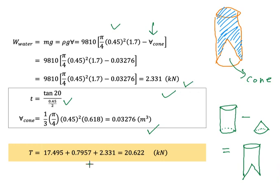Adding all the forces together — from gas, oil, and water — the minimum force T required to hold the cone in place and prevent leaking is 20.622 kilonewtons.